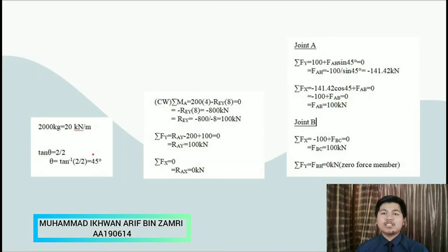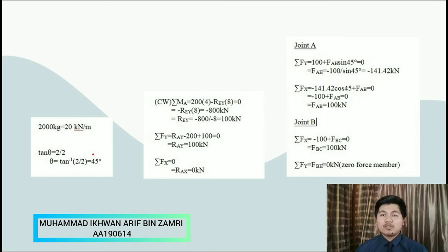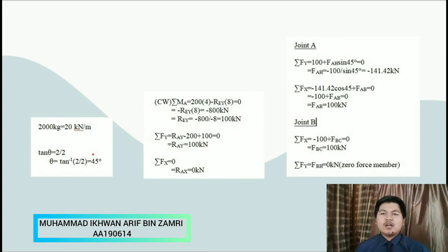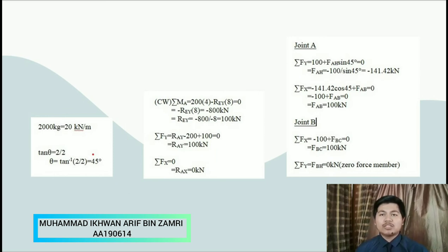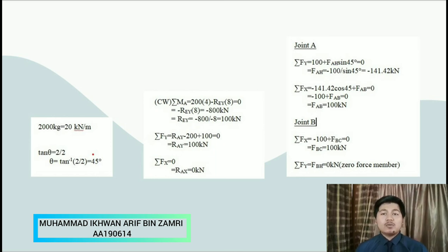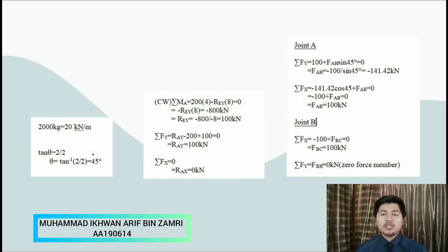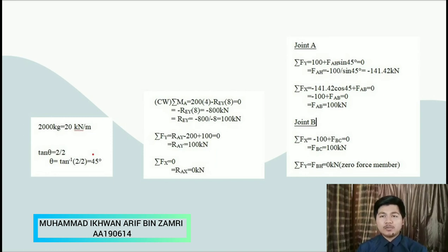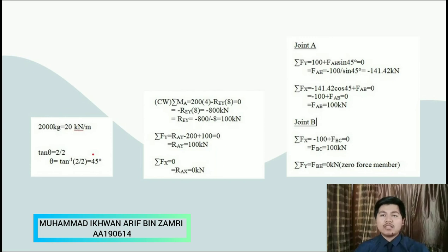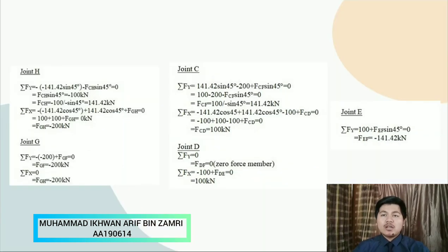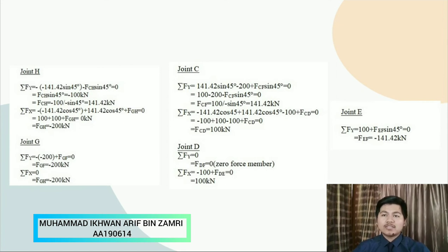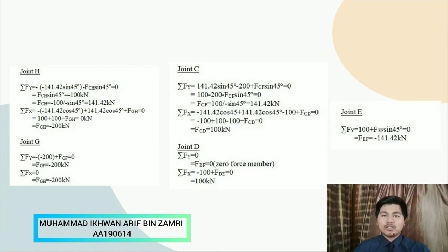So this is the calculation to determine the reaction force for both support which is pin and roller support. We use sum of moment at A to get reaction at E in Fy direction which is 100 kilonewton and sum Fy to get reaction at A in Fy direction which is 100 kilonewton. We use sum Fx to determine the reaction at A in Fx direction which is 0 kilonewton. And we do the calculation at joint A, joint B, joint H, joint G, joint C, joint D and joint E.